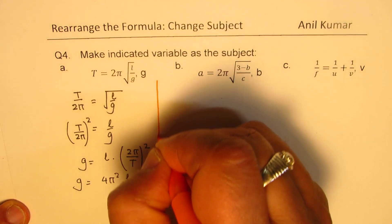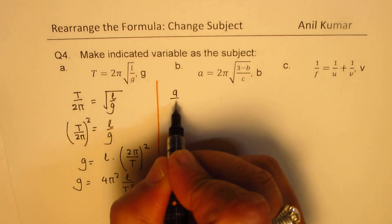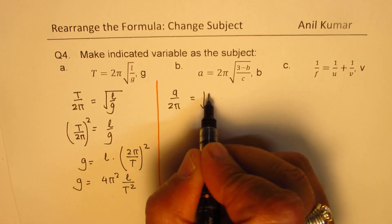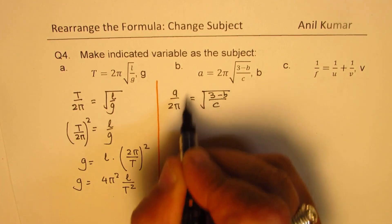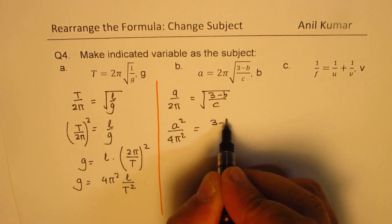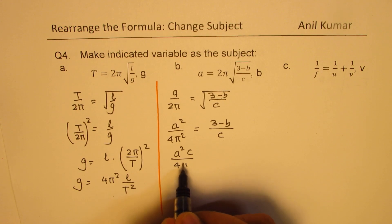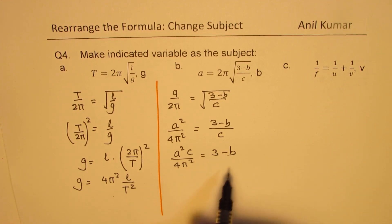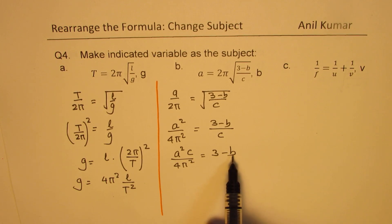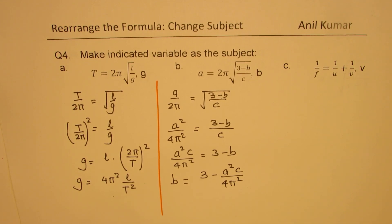I'd like you to pause the video and try part B. Here is the solution: first divide by 2 pi. Squaring gives A squared over 4 pi squared equals 3 minus B over C. Multiply by C: A squared C over 4 pi squared equals 3 minus B. Since B is negative, bring it to the left side: B equals to 3 minus A squared C over 4 pi squared. B has now become the subject.